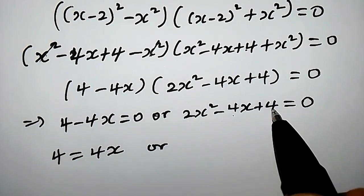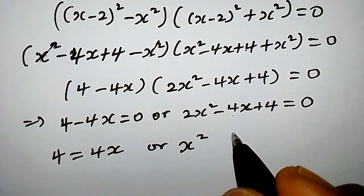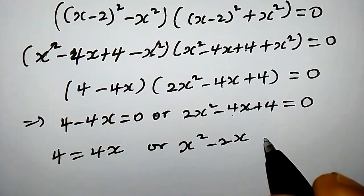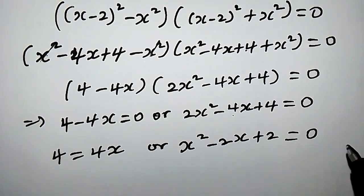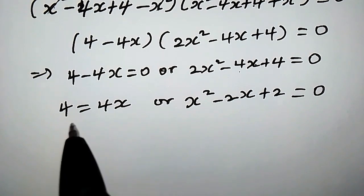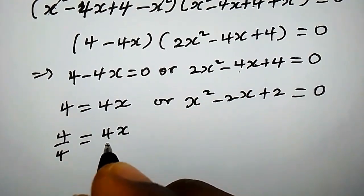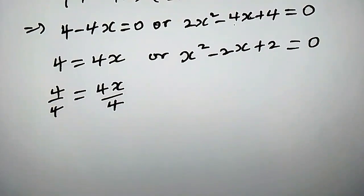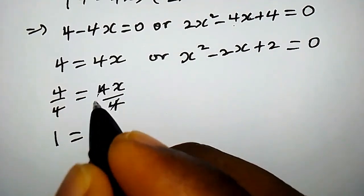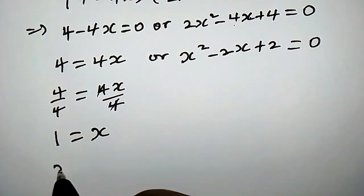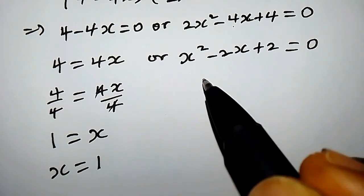Dividing the second equation by 2 gives x squared minus 2x plus 2 equals 0. And dividing both sides of the first equation by 4, we get 4 over 4 equals 4x over 4, so 1 equals x. Thus x equals 1.